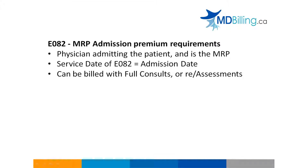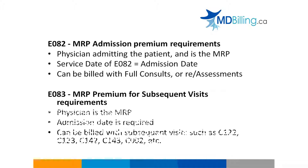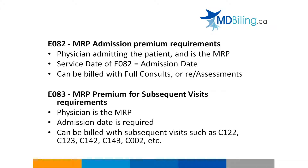The second MRP Premium is for subsequent visits, E083. It can be added to hospital inpatient visits, such as C122, C123, C142, C143, C132, C002, etc. E083 also pays 30% of the subsequent visit. Keep in mind that these two premiums cannot be billed on the same day. When two physicians are considered to be the MRP for the same patient on the same day, the physicians should communicate with each other and determine who should be billing the MRP premiums. The Ministry of Health will only pay one MRP premium, and it will be to the physician who submits the billing first.